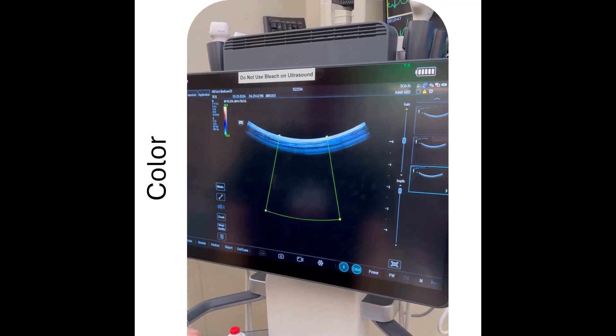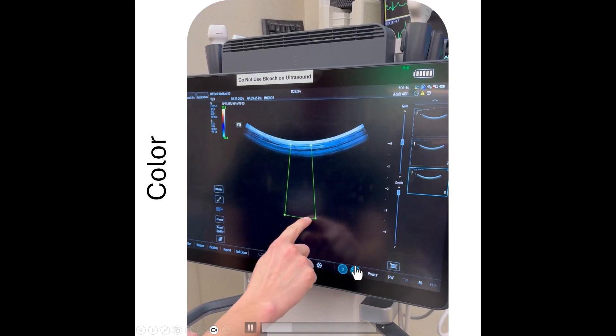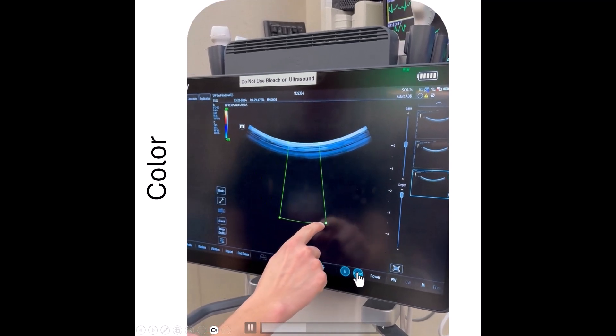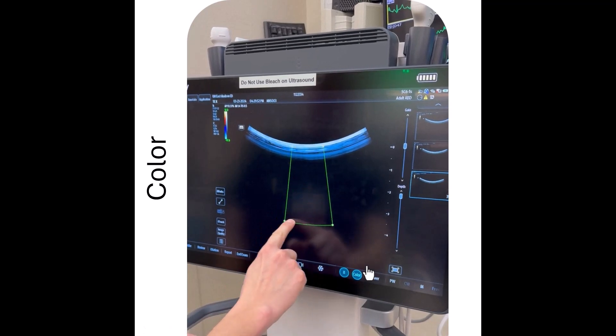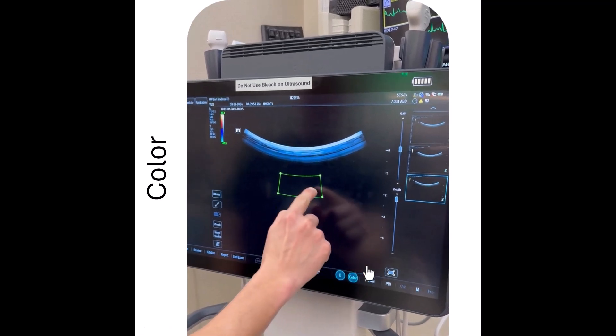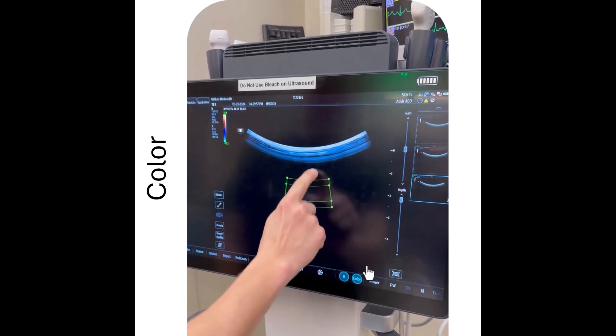Now we'll talk about color. To turn on Color Doppler, you're going to click this color button here. You can adjust the size of the gate by dragging and dropping over a corner, and you can move the gate around by dragging your finger and moving the box around the screen.